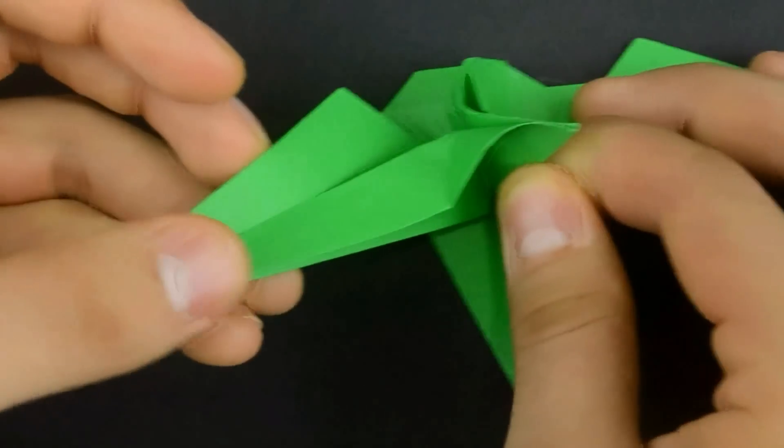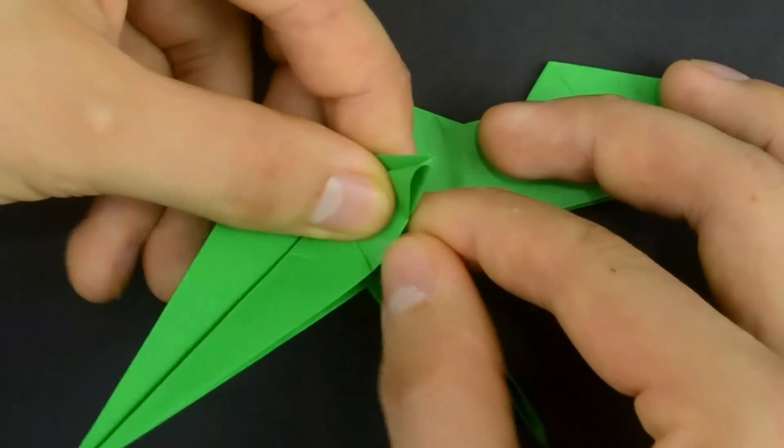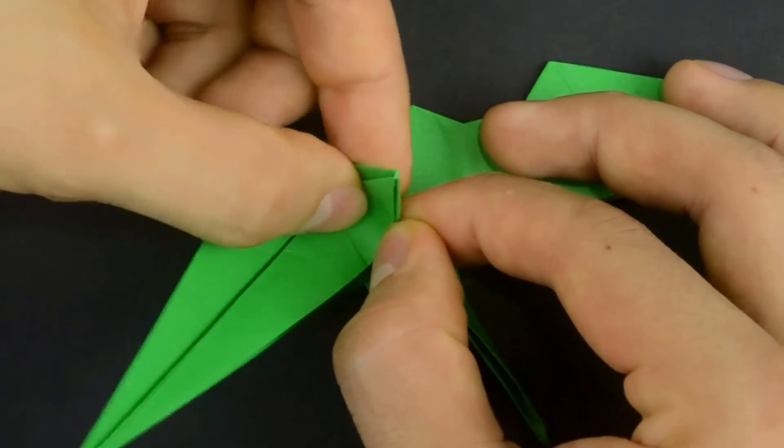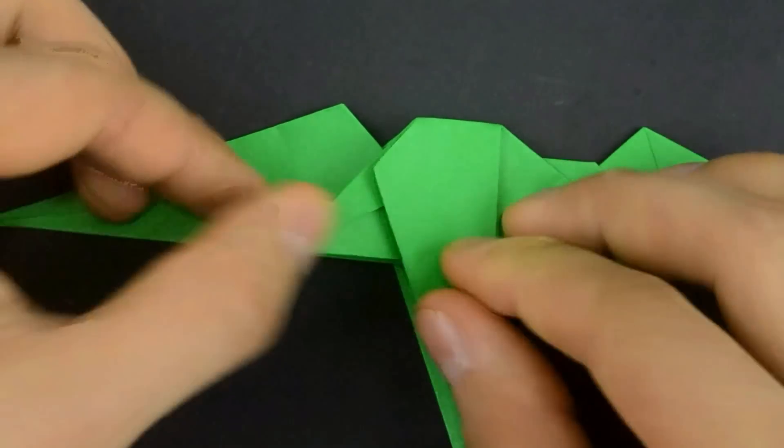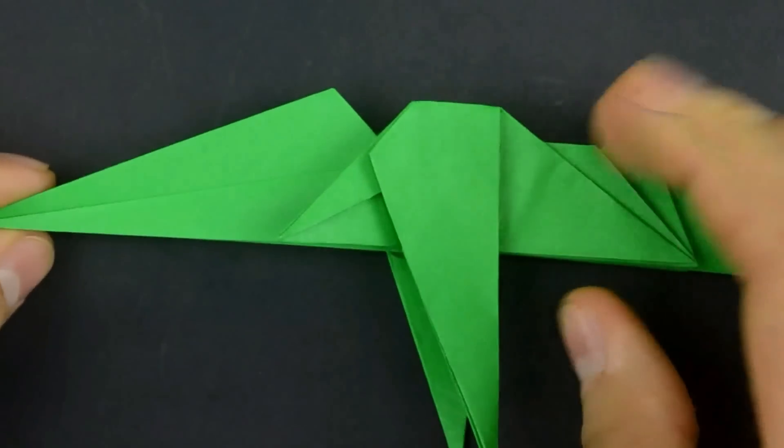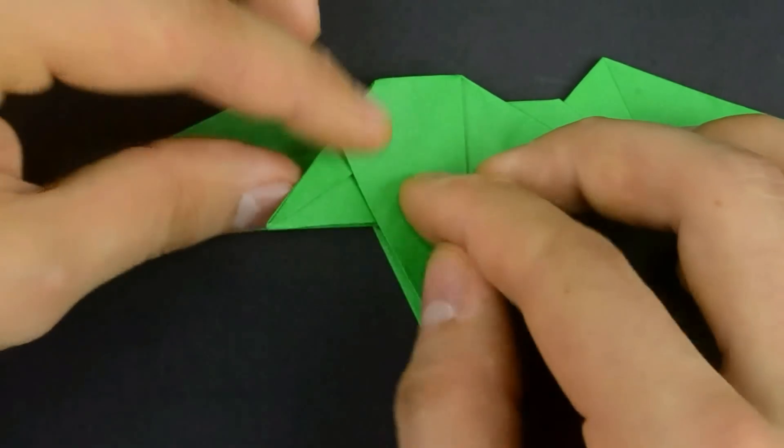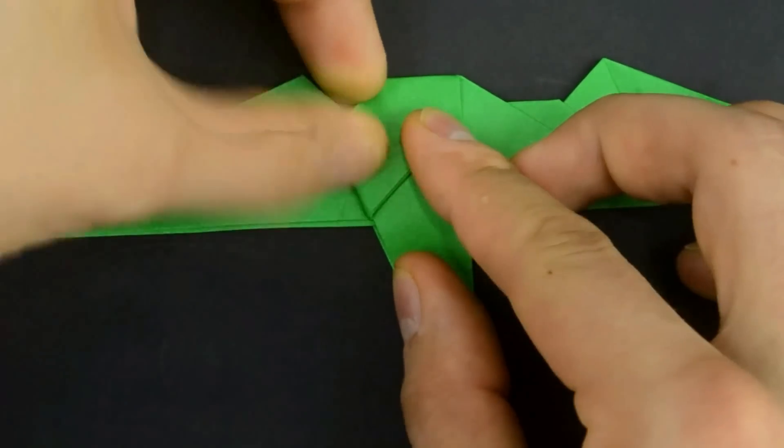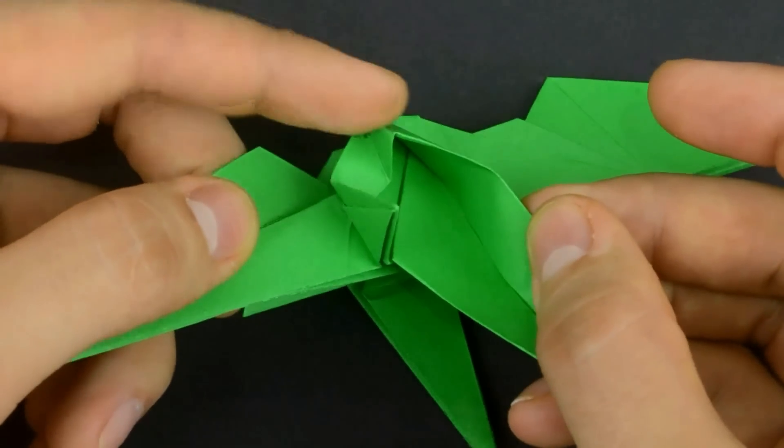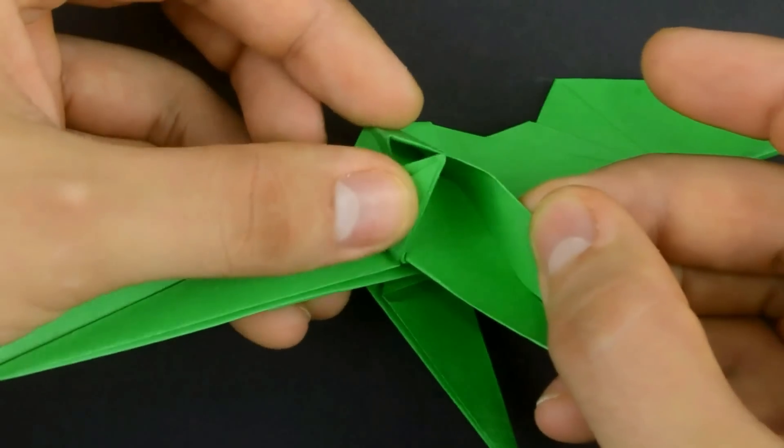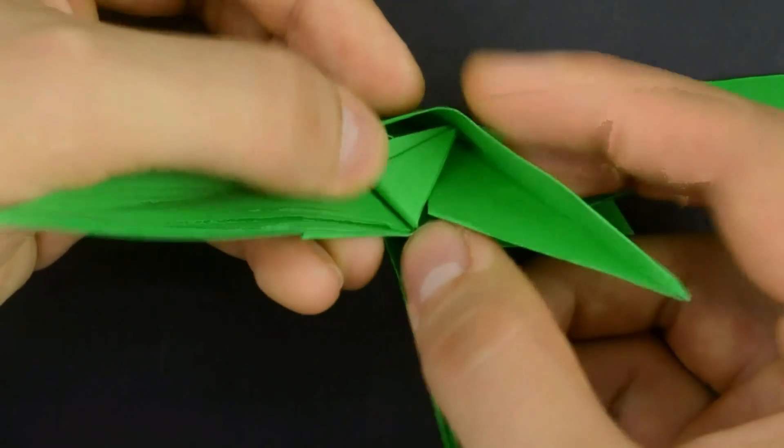Do the same with this little corner. Then close the corner and reinforce. Fold the same little corner over the next layer. Now open here, fit the little corner inside, and close.